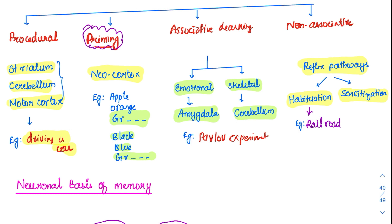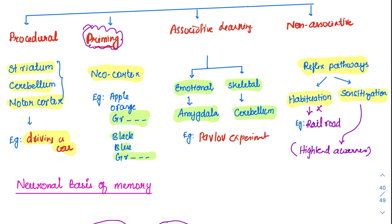What is sensitization? Habituation means ignoring impulses given on a regular basis. Sensitization is when a stimulus — especially a noxious stimulus — is given and the person has a heightened awareness. The classical example is if somebody is bitten by a dog, then every time they see a dog they will have an increased response and will stay away from the dog. This behavior is called sensitization.